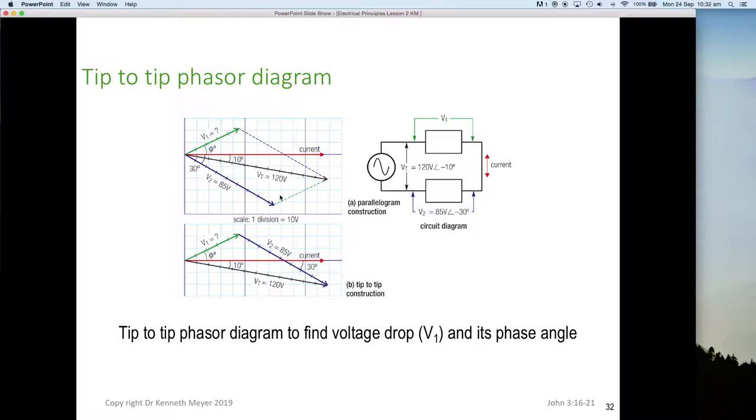If you can see the parallelogram, the difference between this point and this point is the phasor that would make the completion of the parallelogram. So between here and here would complete the parallelogram. By measuring this distance and measuring the angle from the horizontal, we're going to find what voltage 1 is. We scale the length off, get our protractor out, and measure the angle from the horizontal, and that gives us V1.